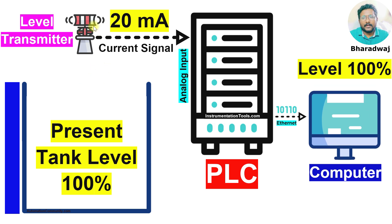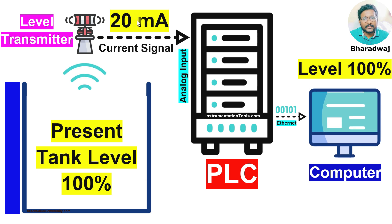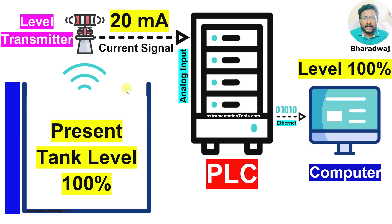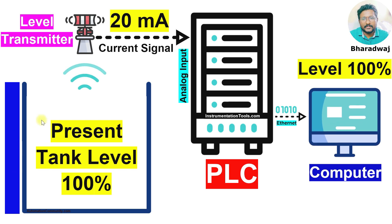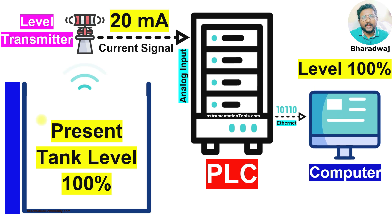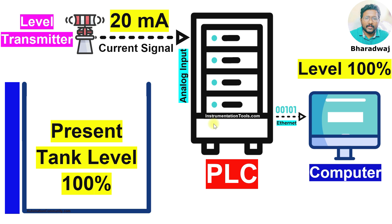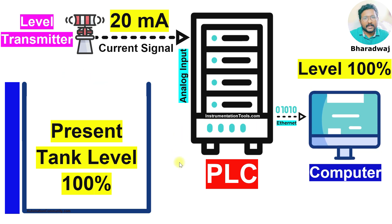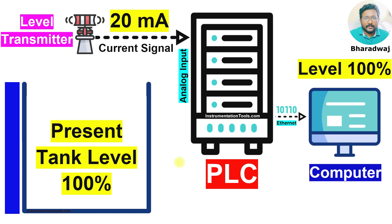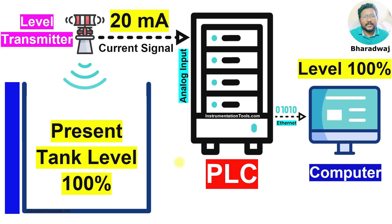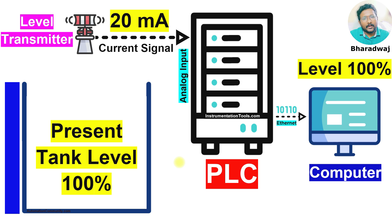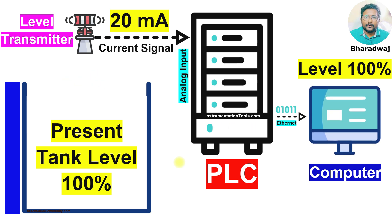At 0%, the transmitter sends 4 mA — that is the zero scale — and at 100%, the transmitter sends 20 mA to the PLC, which is the full scale value. In percentage terms: 0% to 100%, and in current terms: 4 mA to 20 mA. This is how the transmitter sends the current signal and the PLC calculates the equivalent process parameter value. This concept is the same for every instrument which provides an analog input to a PLC, DCS, or any controller based on 4 to 20 mA.